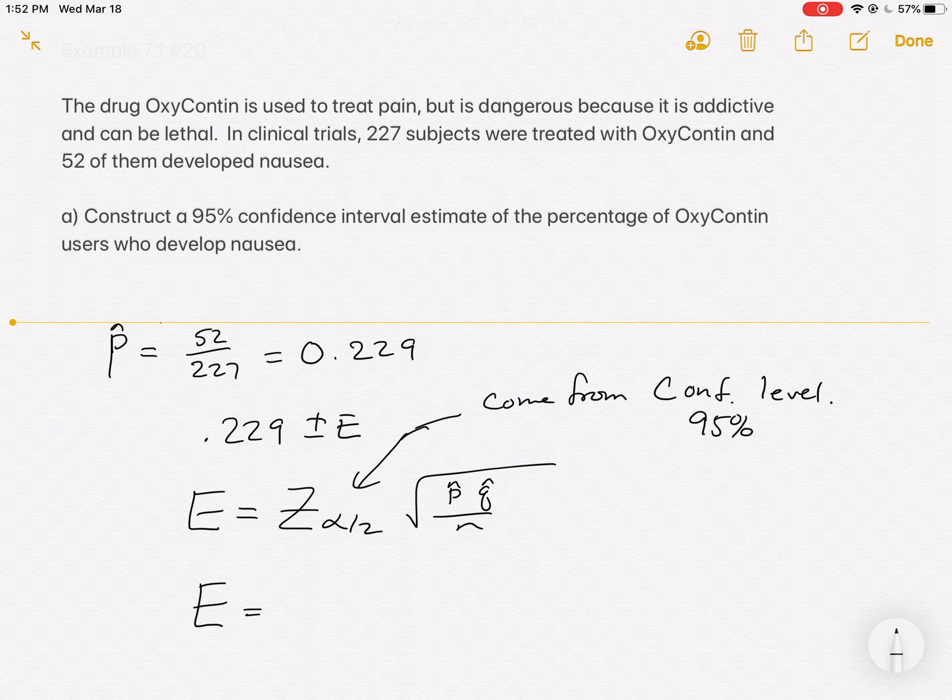So in our problem, it was given in the problem. The 95% is in that part A. So they're asking us to do that. If we go to the chart and look in the bottom right-hand corner, it's going to tell us the number is 1.96. So since it was a common critical value, we already know what it is.